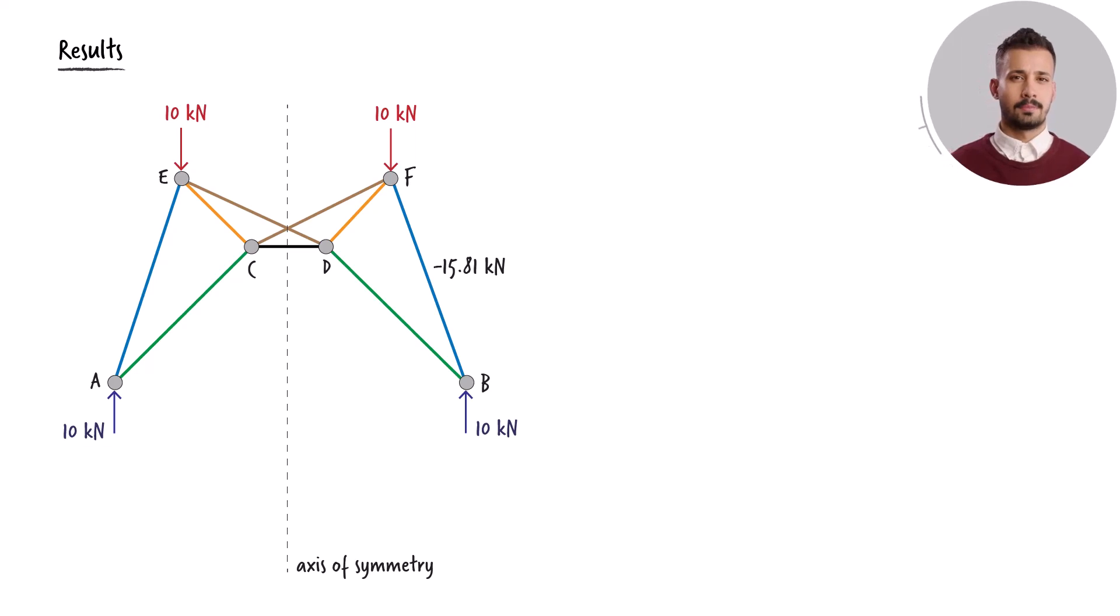The compressive force in member BF is measured at 15.81 kilonewtons. This results in an identical compressive force in member AE, also at negative 15.81 kilonewtons. Similarly, the force determined for member BD is 7.07 kilonewtons, which means member AC is subjected to an equal force of 7.07 kilonewtons.